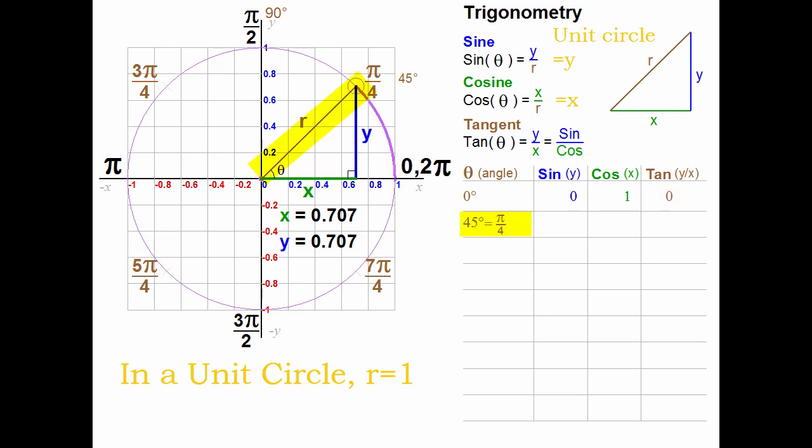At 45 degrees, or pi over 4, what's the y-coordinate? We've figured out that this is 0.707, which is the sine. What's the x-coordinate? Here, x and y are equal, so x is also 0.707. That's the cosine. The tangent is y over x, and since they're both the same, the tangent at 45 degrees is 1.